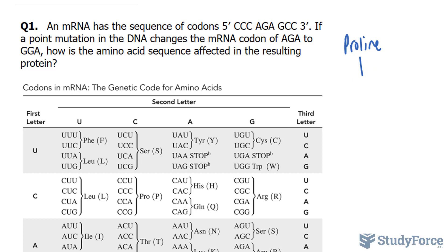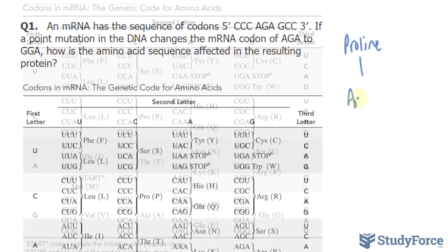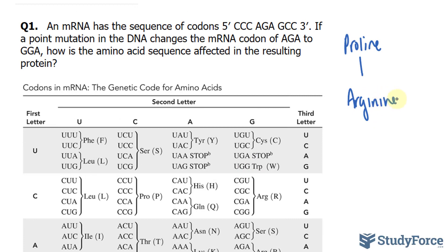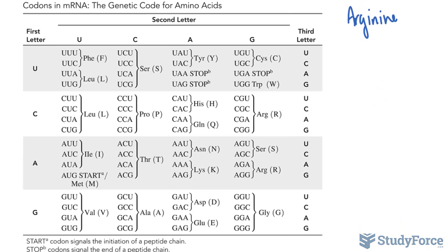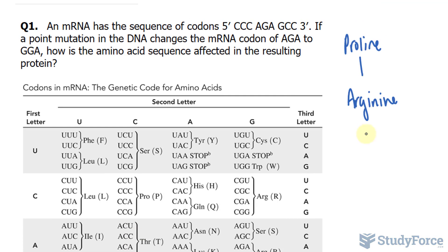Then we have AGA — remember, this is the good copy. A, G, and then we look for A as the last letter, and it's arginine (A-R-G-I-N-I-N-E). And finally, GCC: G, C, and we look in this block — it turns out to be alanine (A-L-A-N-I-N-E).